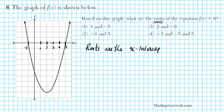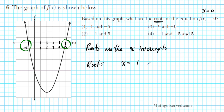We have an x-intercept anywhere y is equal to 0. So f of x equals y, and when f of x equals 0, we have y equals 0. Whatever x value satisfies this equation are the roots and also the x-intercepts. In this graph, we're looking for the x values where the graph intercepts the x-axis. We have two of them: the roots are x equals negative 1 and x equals 5.